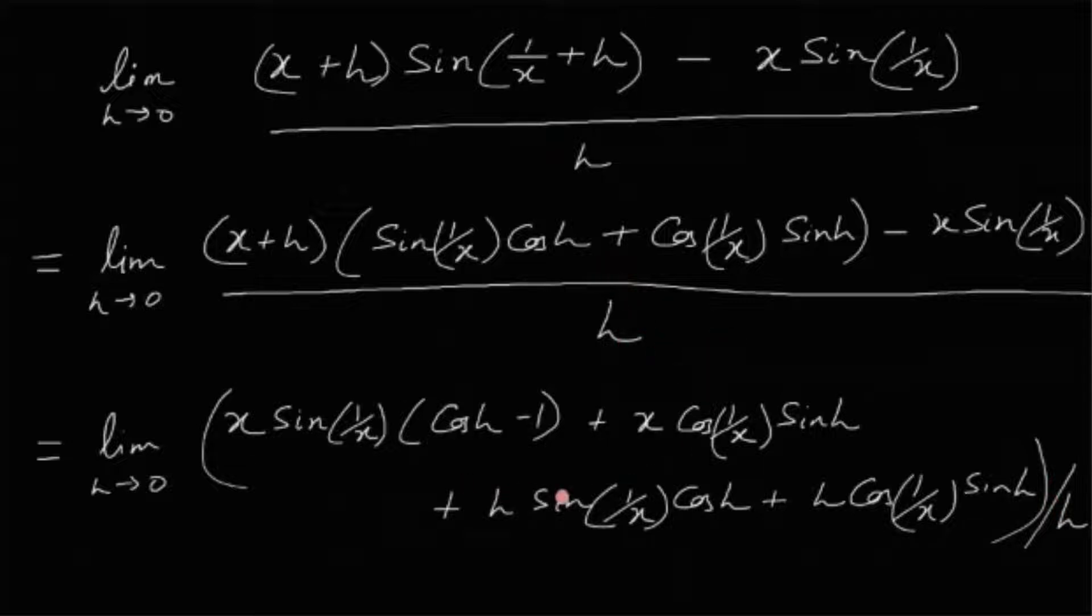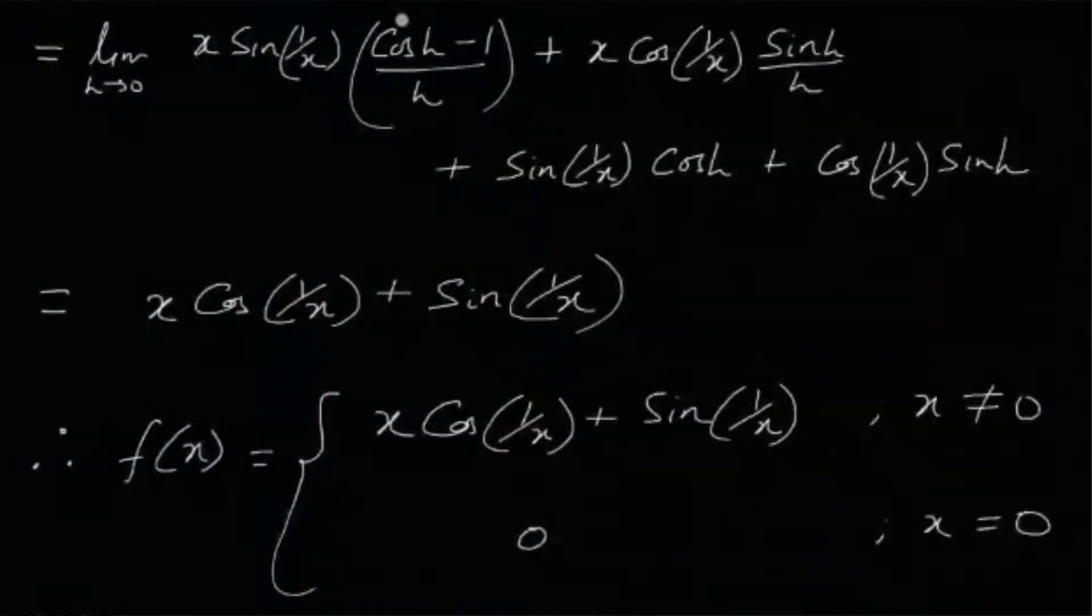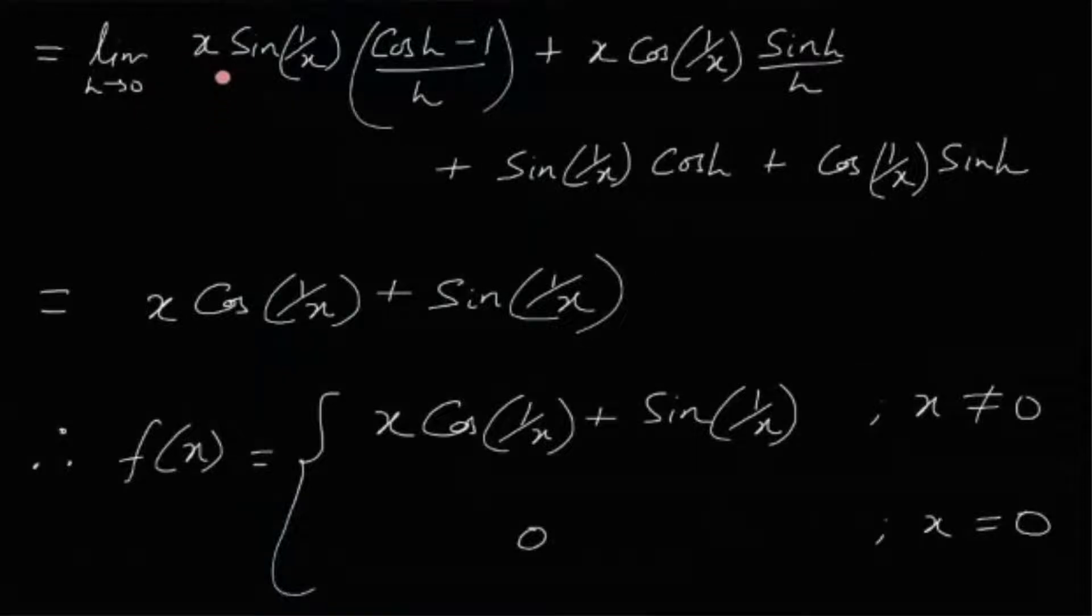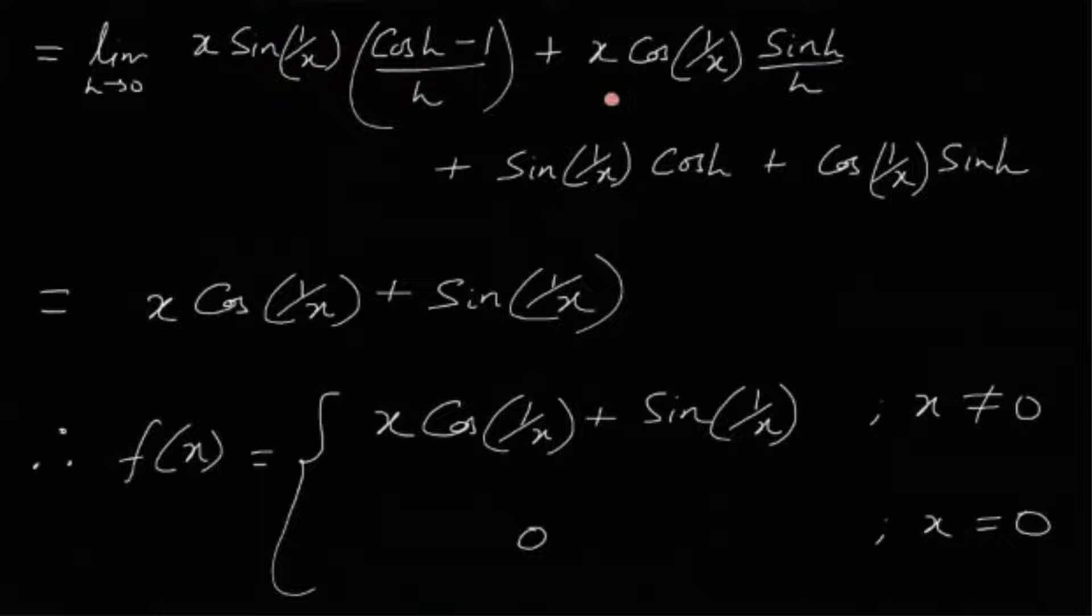So distributing the denominator h in each of the four terms, dividing each of the terms by h, we get limit x sin(1/x)(cos(h)-1)/h plus x cos(1/x)sin(h)/h and these terms are the third and fourth term.